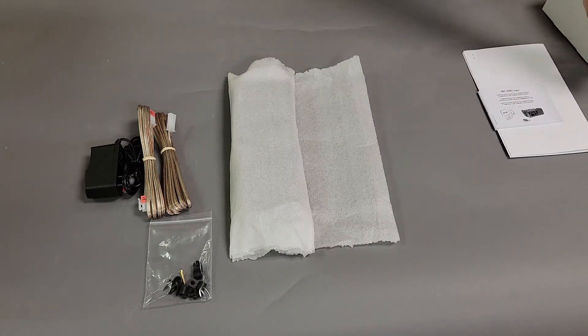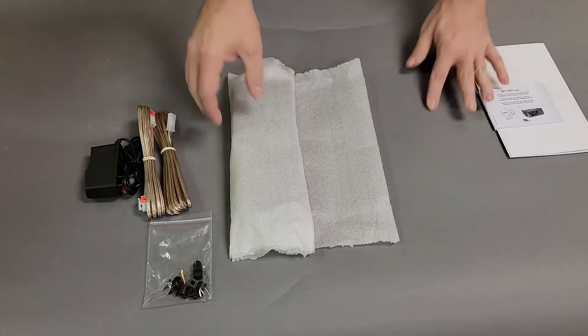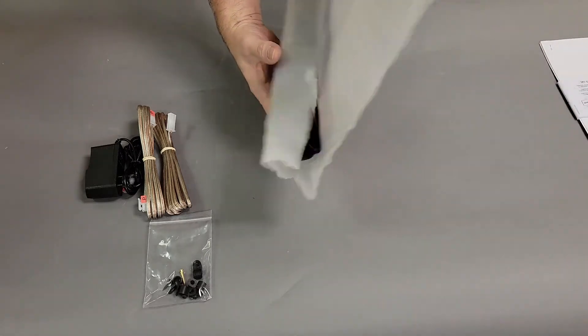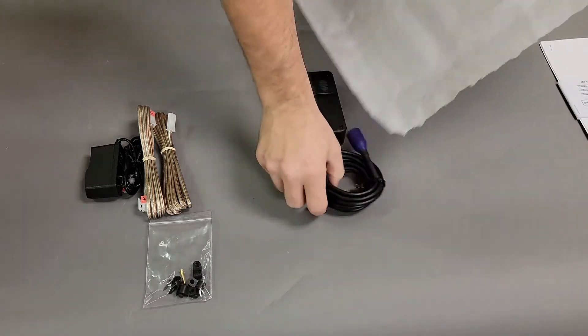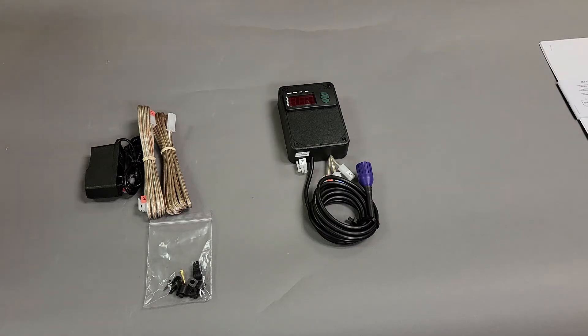This system is accurate to 2% and will keep your humidor within a 2% range of the set point. The controls are sent out preset for 70% humidity.